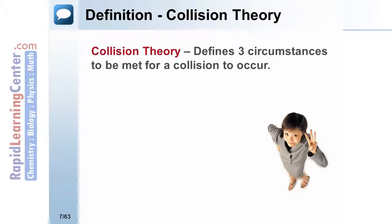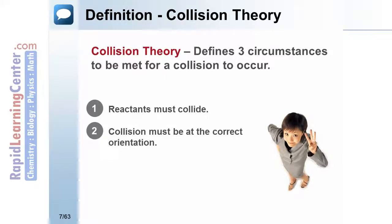Collision theory is the basic theory behind kinetics. In order for a reaction to occur, the reactants must collide in the correct orientation or position, and with the minimum amount of energy to transform from the reactants to the products.